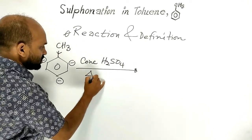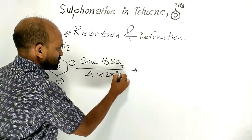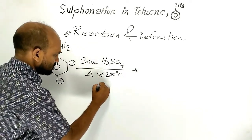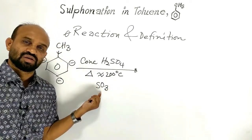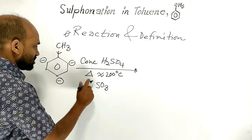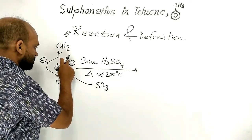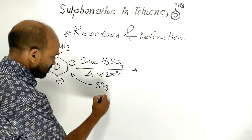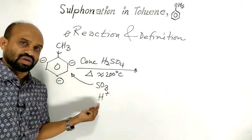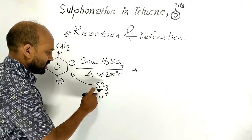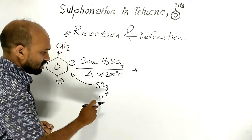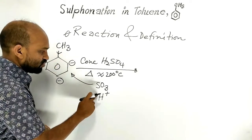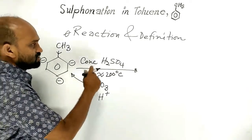When toluene is treated with concentrated sulfuric acid at a high temperature — around 200 degrees Celsius — the sulfuric acid produces sulfur trioxide, which acts as electrophile. This electrophile attacks the benzene ring at the ortho and para positions. At the same time, hydrogen atoms leave from those positions as protons. So sulfur trioxide combines with the benzene ring while hydrogen atoms go away, and electrophilic substitution occurs.